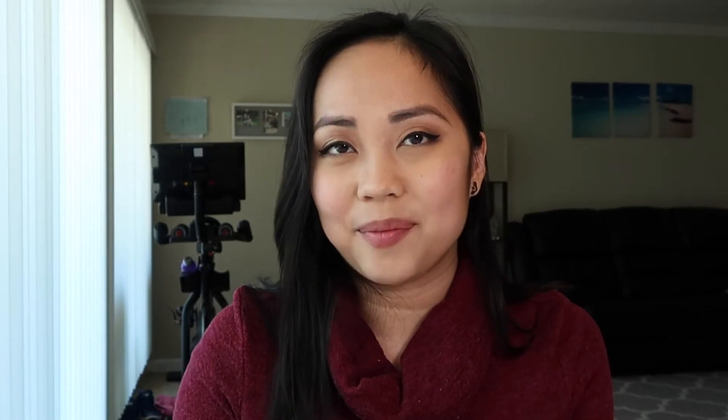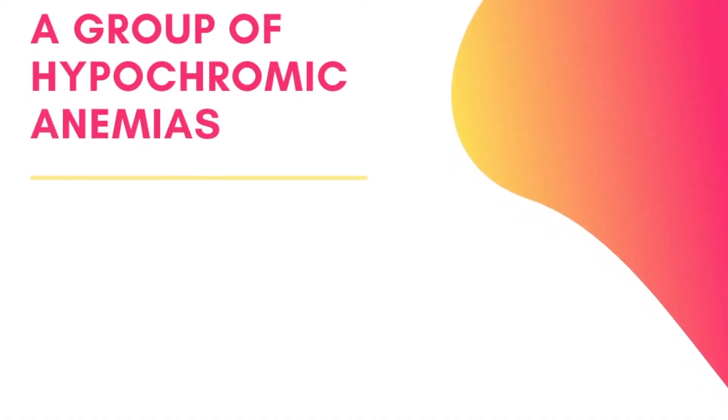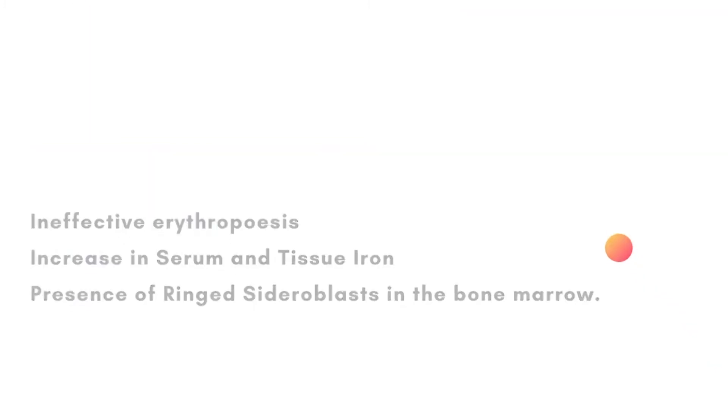Sideroblastic anemia is actually a group of anemias — it's not just one, it's a group. So it's a group of hypochromic anemias. There is ineffective erythropoiesis, there's an increase in serum and tissue iron, and the presence of ringed sideroblasts on the bone marrow.